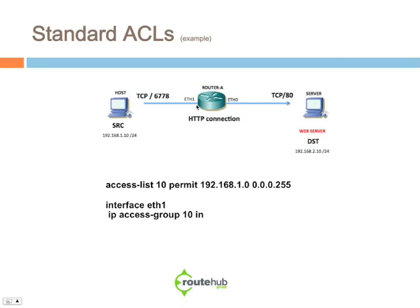With that being said, step number three: we will go under interface Ethernet 1, and the syntax to apply that access list will be 'ip access-group 10 in' — 'in' for inbound. So that means the request comes in, there's a policy associated with it, it checks permit, that matches, then you can go through.